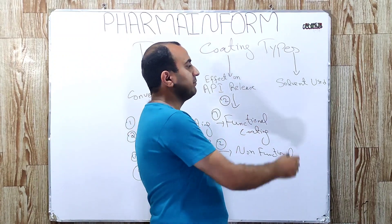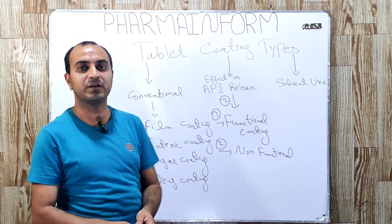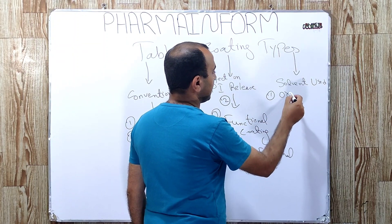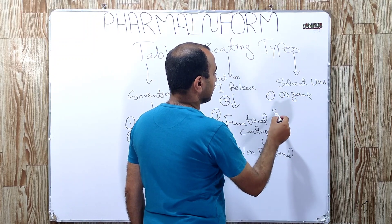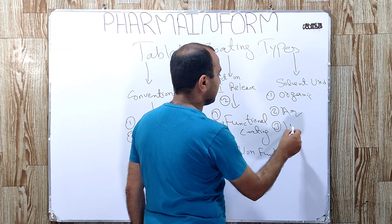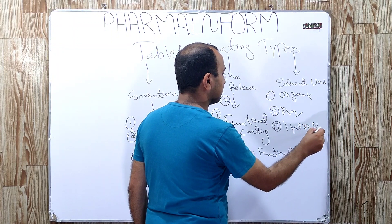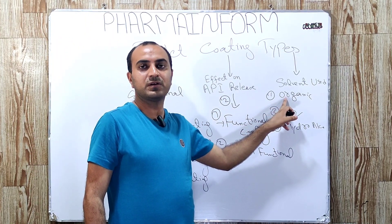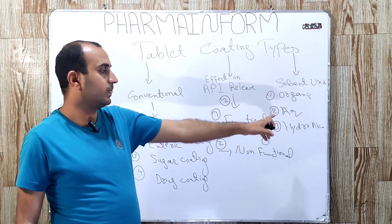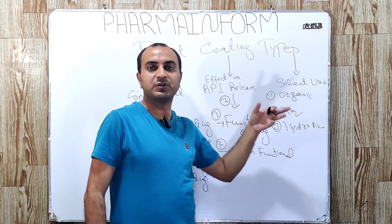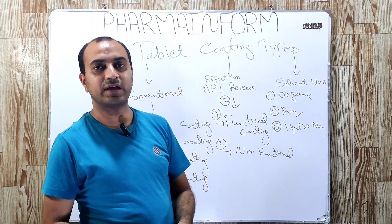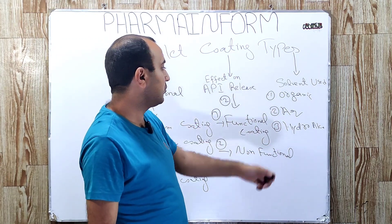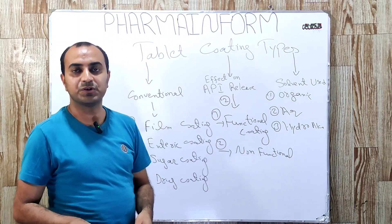The third classification is on the basis of solvent used. On this basis, we divide tablet coating into three types: one is organic, second is aqueous, and third is hydro-alcoholic. If we use only an organic solvent, this is known as organic coating. If we use aqueous solvent — meaning water — in our coating suspension, it is known as aqueous coating. And if we use a combination of both aqueous and organic, it is known as hydro-alcoholic tablet coating.